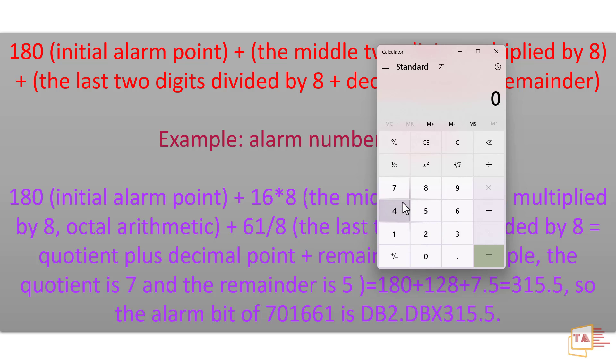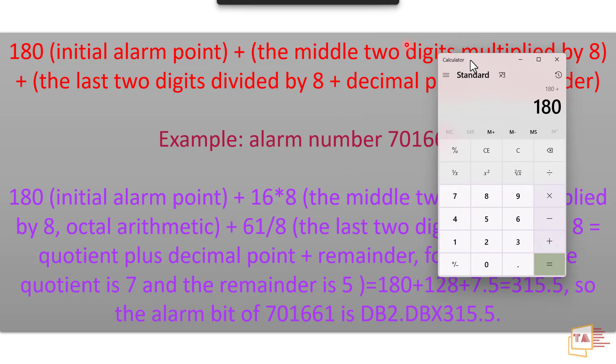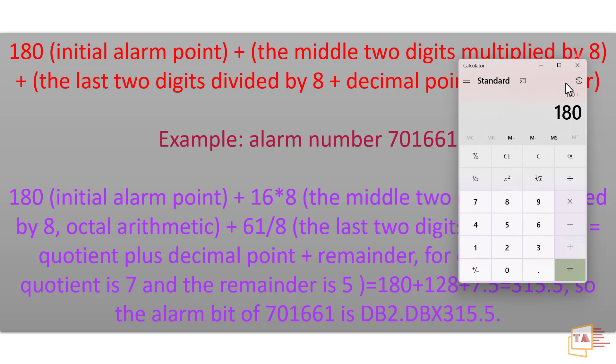So the middle two numbers are zero, so I'm just going to add 180 plus zero. Because the middle two numbers are zero and multiply by 8 means it will come zero only. So after that we have 61, so divide the 61. 7 times 8 is 56 and balance is 5.